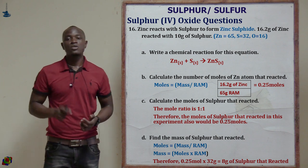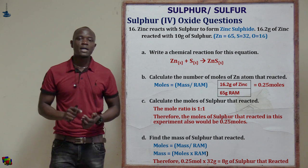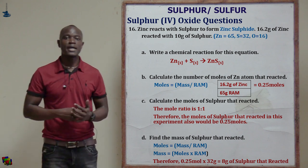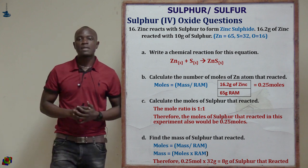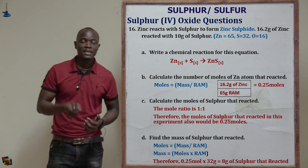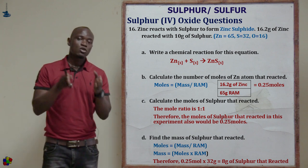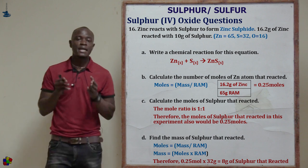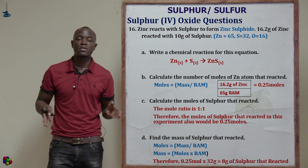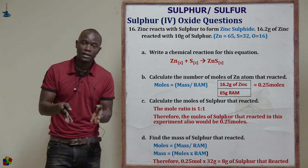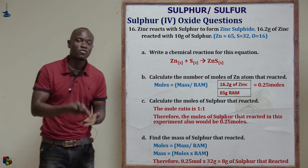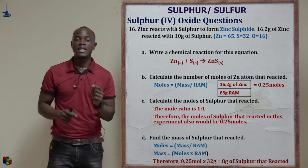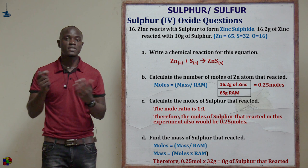Question sixteen: zinc reacts with sulfur to form zinc sulfide, where 16.2 grams of zinc reacted with 10 grams of sulfur. The atomic mass of zinc is 65 and sulfur is 32. Part A asks to write the chemical equation: zinc + sulfur → zinc sulfide. Part B asks to calculate the moles of zinc that reacted: moles = mass ÷ relative atomic mass = 16.2 ÷ 65 = 0.25 moles of zinc.